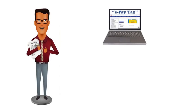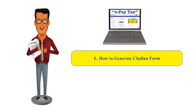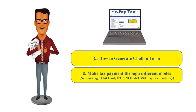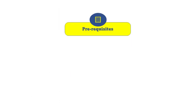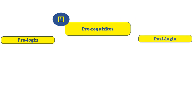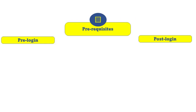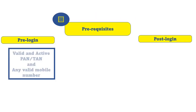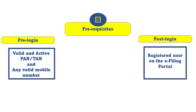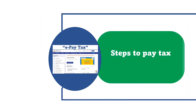In this video we will see how to use ePayTax functionality on the eFiling portal for generating Chalan forms and making tax payment through different modes: net banking, debit card, over the counter, NEFT, RTGS, and payment gateway. The ePayTax facility is available in both pre-login and post-login modes. For pre-login access, you need a valid and active PAN or TAN number and any valid mobile number. For post-login access, you must be a registered user on the eFiling portal.